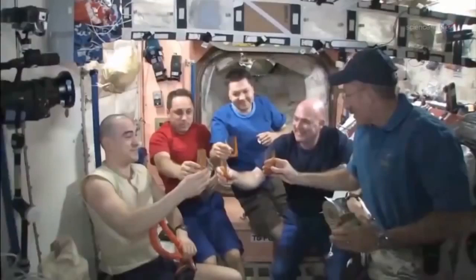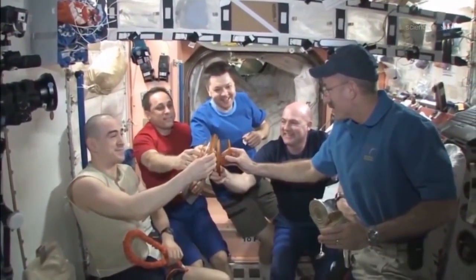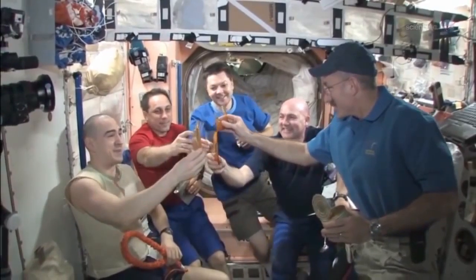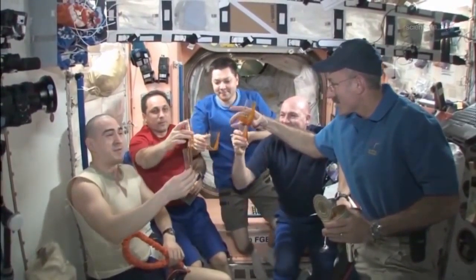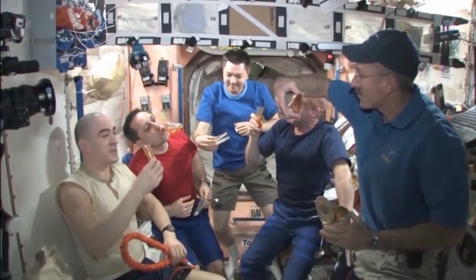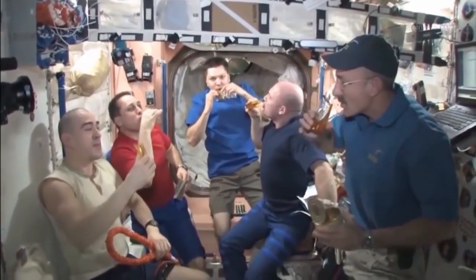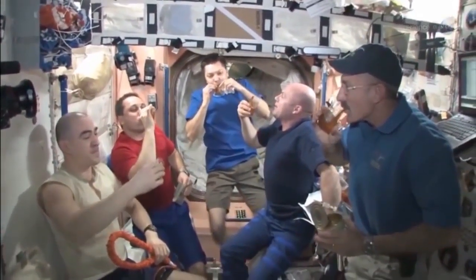This may well be what future space colonists use when they want to have a celebration. Indeed, the patent application specifically mentions toasting as one of the uses of the device. It's easy to imagine what they might be toasting: toilets and air conditioners and fuel tanks and recycling systems, all working better thanks to capillary flow experiments on the space station.